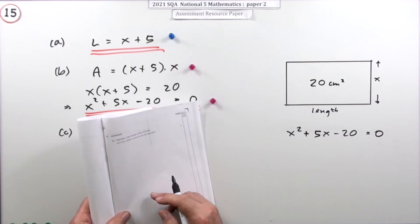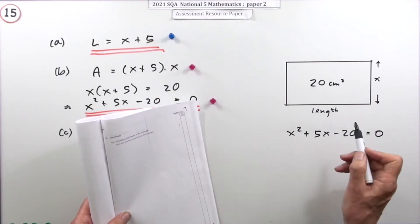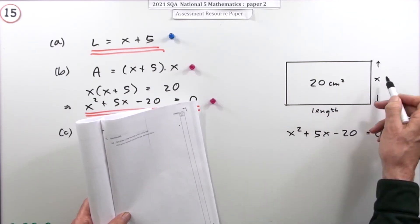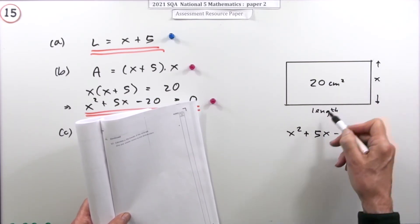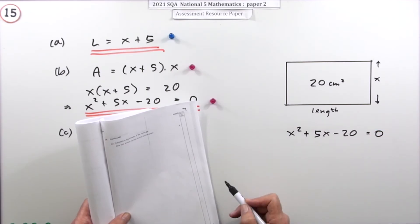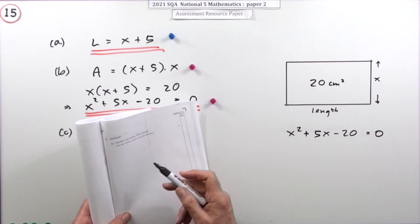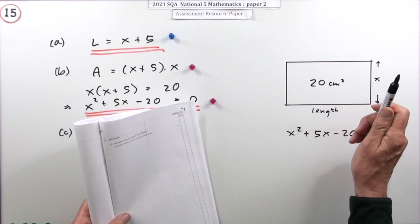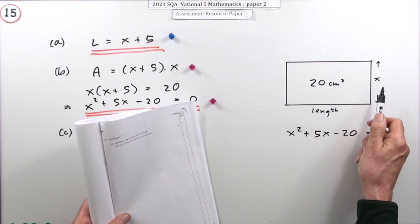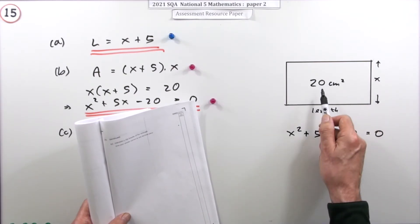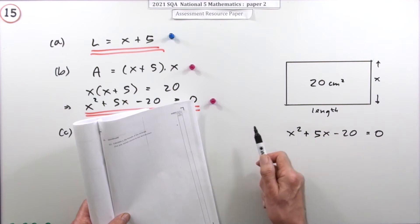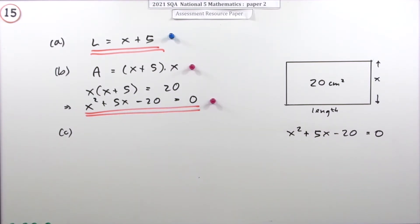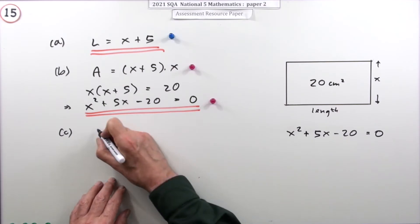In part c, for that area to be exactly 20 there's only one particular value of x. Calculate x so that you do end up with an area of 20, giving your answer correct to one decimal place. That will require the quadratic formula because you have a quadratic equation.